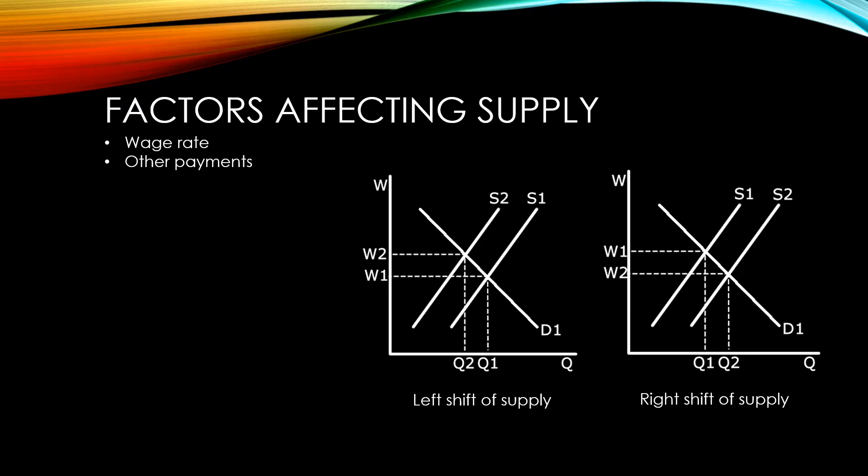If the size of the workforce in a country grows, then there will be a right shift of supply. If it shrinks, there will be a left shift of supply. The main factors that affect this are the difference between the number of people entering the workforce at working age and the number of people leaving at retirement age, as well as net migration to the country.